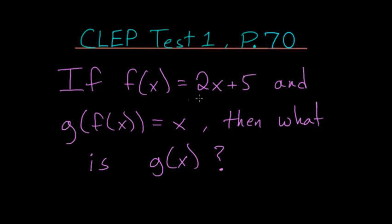If f of x is equal to 2x plus 5 and g of f of x is equal to x, then what is g of x?